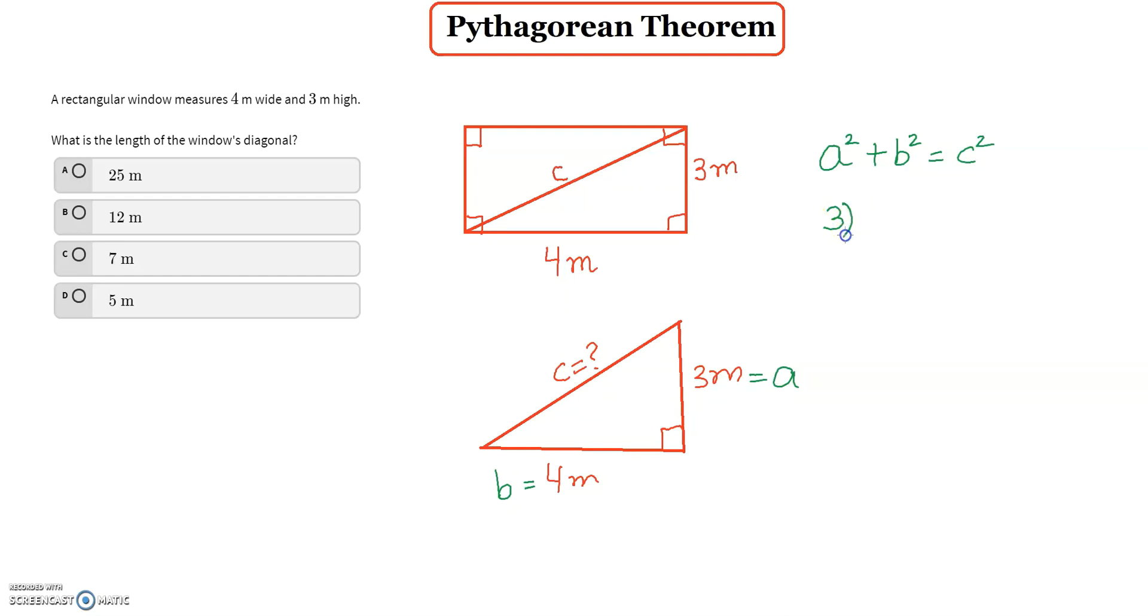A is 3 so I will say 3 squared, b is 4, 4 squared equals to c squared. So 3 squared is 3 times 3 plus 4 squared is 4 times 4 equals to c squared. So it's 9 plus 16 equals to c squared. When we add 9 and 16 it will give me 25.